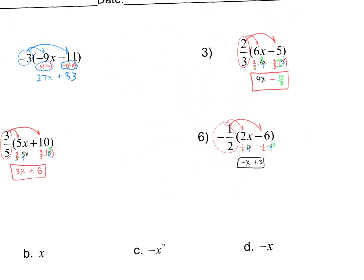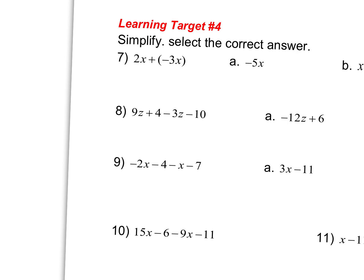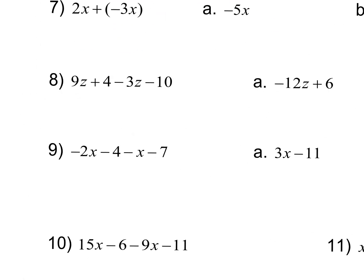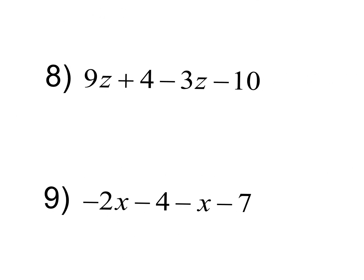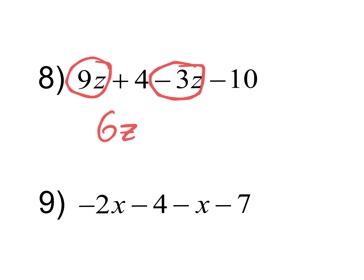So that's the only new thing we're doing today — distributive property with fractions. We still have combining like terms from the past class. We combine the letters with the letters and numbers with the numbers — apples with apples, oranges with oranges. In this case, nine z combined with negative three z: if you have nine and you owe three, you're going to have six z. Then a positive four and a negative ten — that's like having four dollars and owing ten dollars, so you owe six.